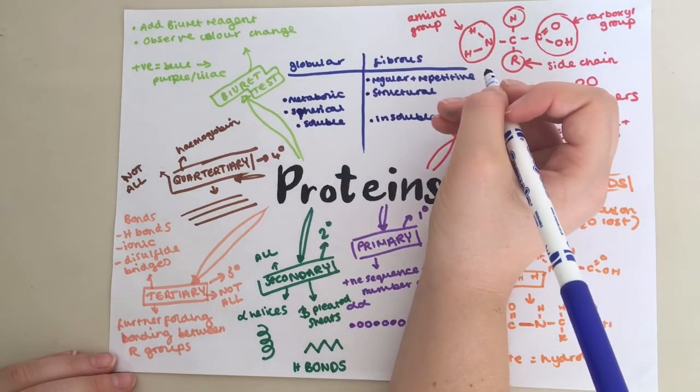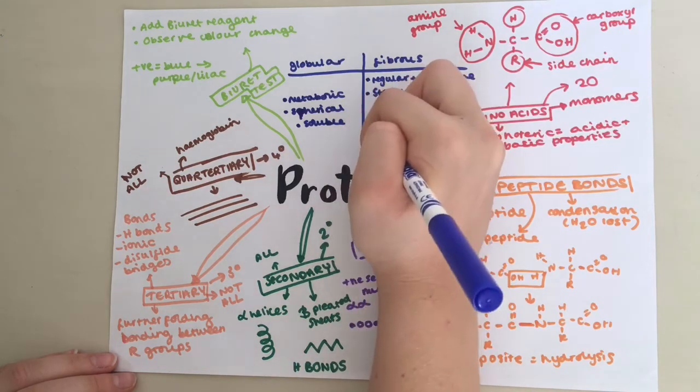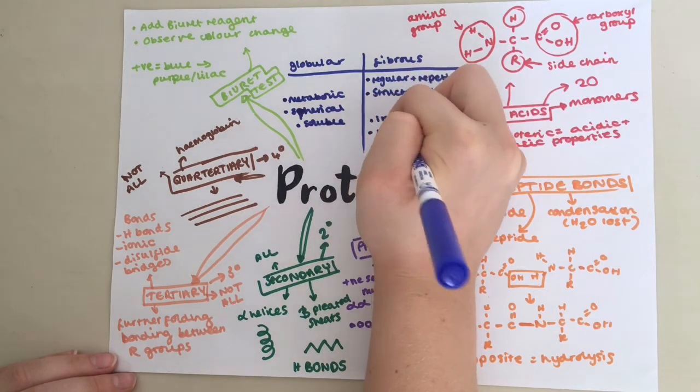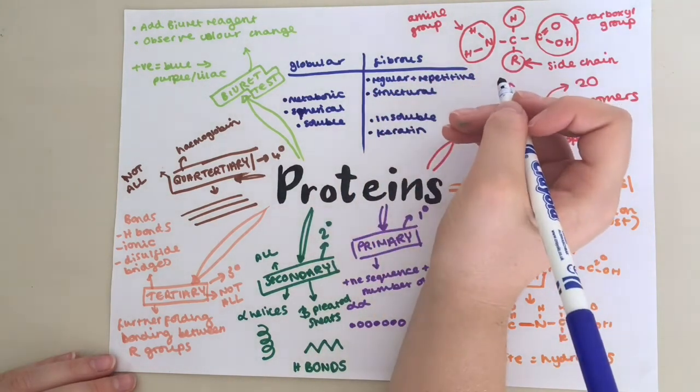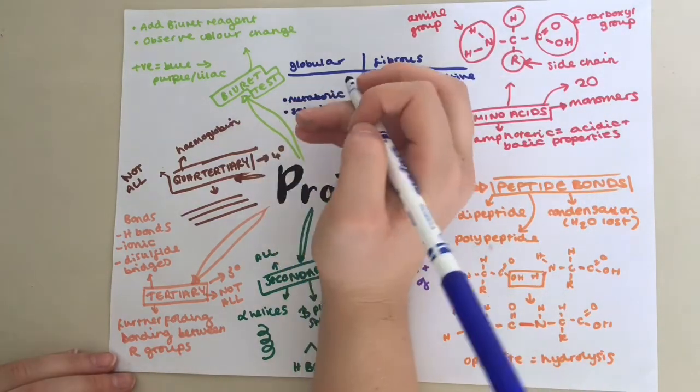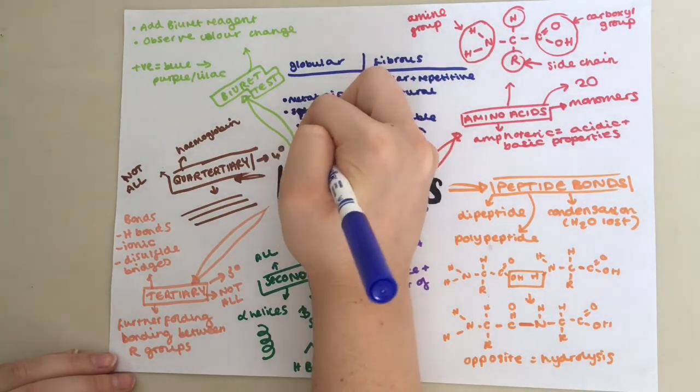An example of fibrous protein is keratin, which is found in hair and nails. Examples of globular proteins include enzymes and haemoglobin.